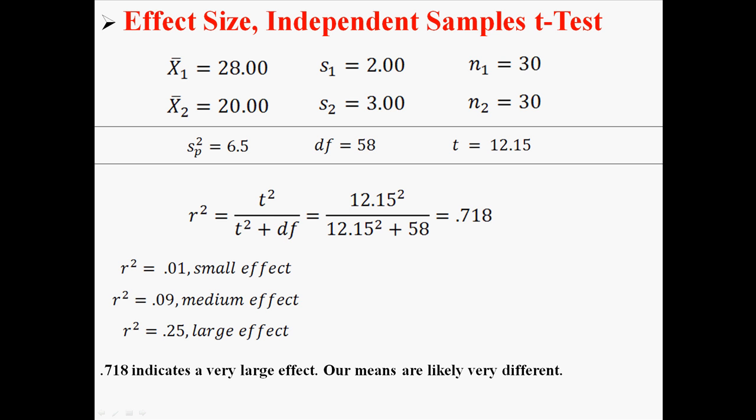This is just like Cohen's d—there are different criteria to measure the effect. If it's 0.01, that's a small effect. 0.09, that's a medium effect. And 0.25, that's a large effect. In this case we had 0.718, which is a lot more than 0.25. So again, it would indicate a very large effect.